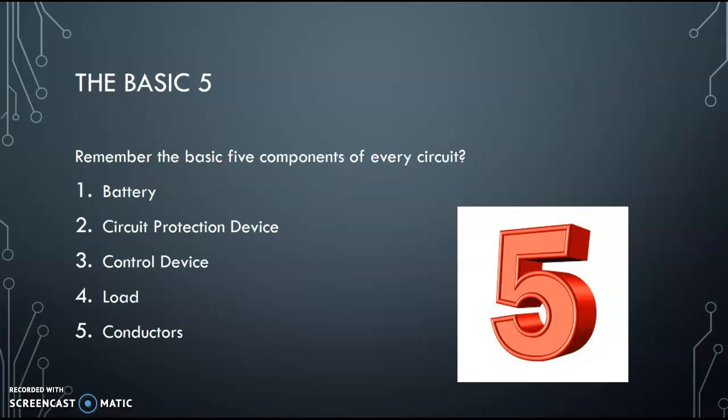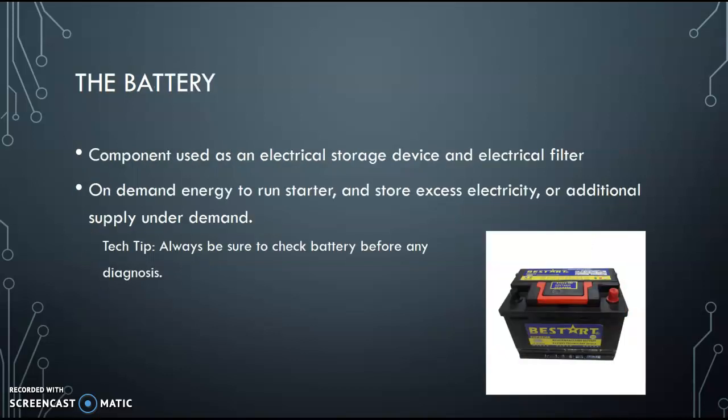So here's the basic five. Remember when we talked about intro to series and parallel circuits and we talked about the five main components that every circuit has to have. Of course you remember the battery, there's a circuit protection device, the control device, load, and conductors. The battery basically is electrical storage device, uses chemistry to create electricity, potential electricity between two dissimilar metals. Basically you have an abundance of electrons on one and absence of electrons on the other plate.